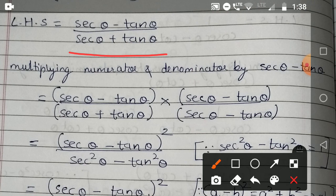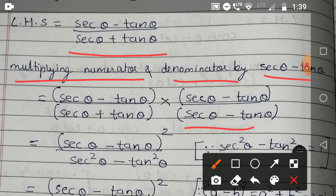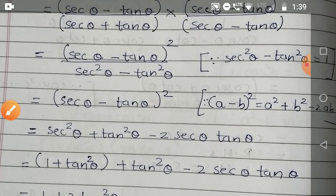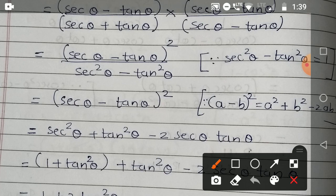We will proceed by multiplying numerator and denominator by (sec θ - tan θ). So this way we are going to solve this sum. Sec θ - tan θ multiply in the numerator as well as denominator.